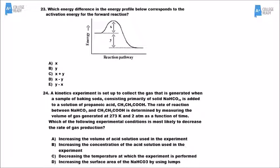For number 23, you're reading the reaction energy diagram. The activation energy for the forward reaction goes from where you started to the top of the hill, which is where the activated complex is — represented by letter X. For the reverse reaction, it would be X plus Y, because you start at the lower energy level and the distance to the top of the hill is X plus Y.